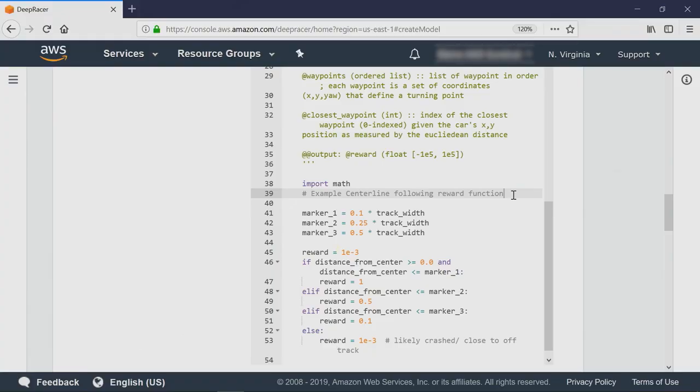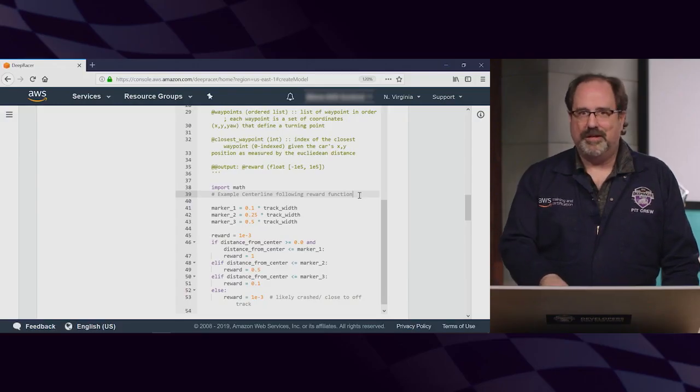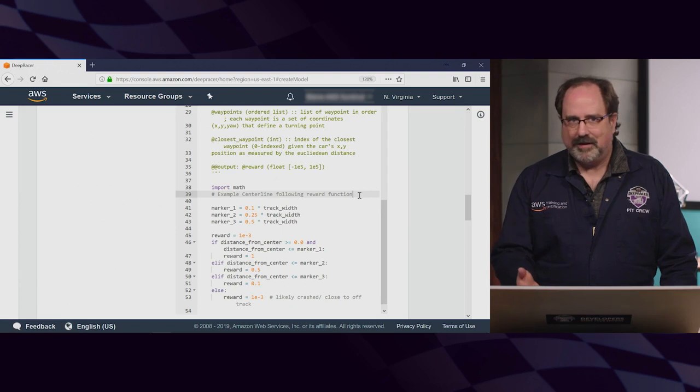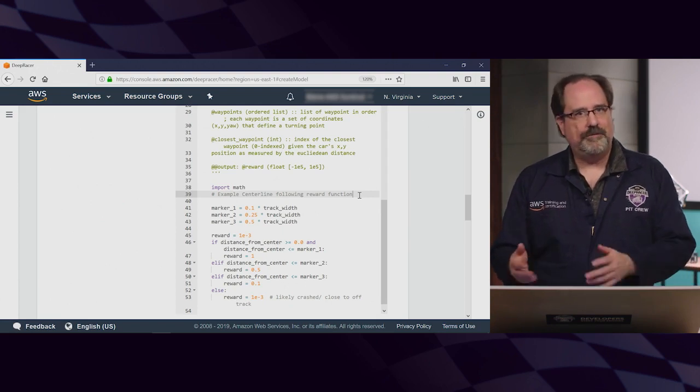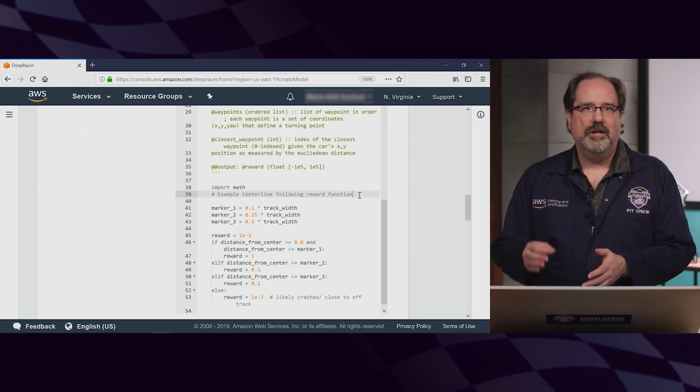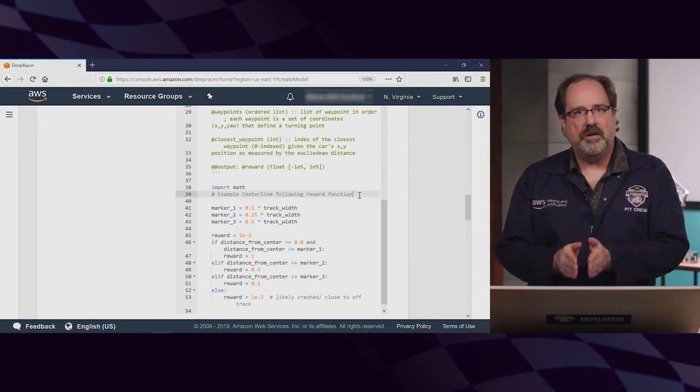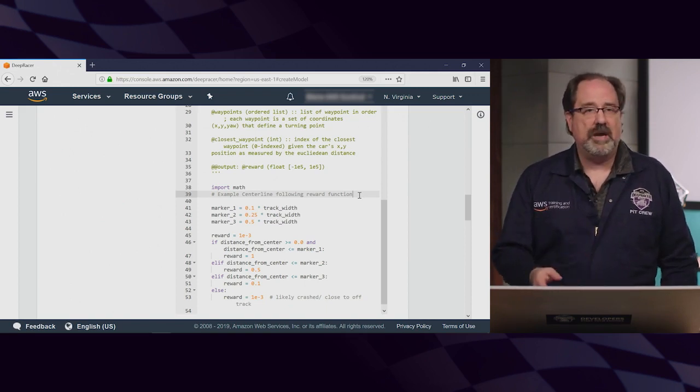You'll see exactly what I mean in just a second. Let's start by looking at the basic function first. At the top, you see the reward function defined with all the parameters we just walked through being passed into the function. Here, there's an import of the Python library math, and now to the meat of this version of the function. As you may notice, this truly is a basic function in that it's only focusing on a strategy to incentivize the car staying close to the center of the track via the distance from center parameter.